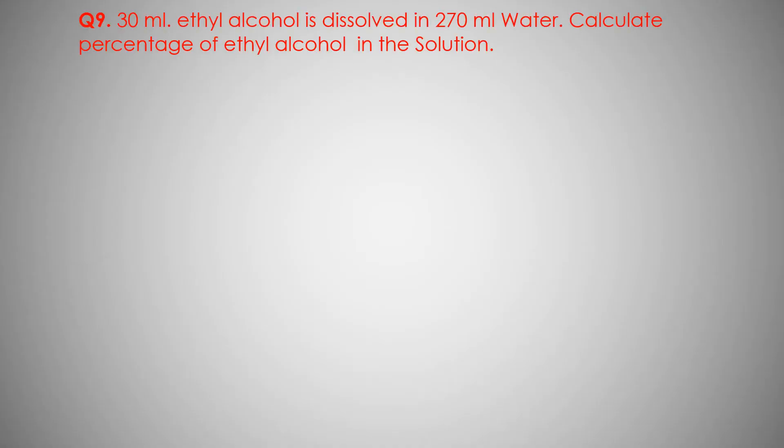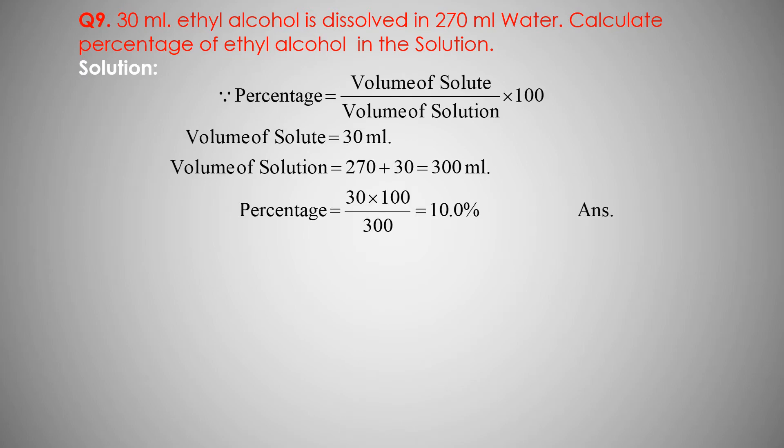Question number 9: 30 milliliter ethyl alcohol is dissolved into 70 milliliter water. Calculate the percentage of ethyl alcohol in the solution. Volume percentage equals volume of solute upon volume of solution into 100. Let us calculate the percentage.